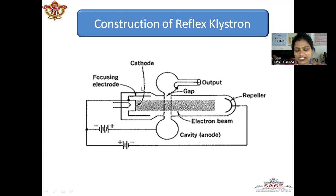One is the buncher cavity, other is the catcher cavity. But in this we are having only one which acts as an output. And here we have a repeller. In two cavity klystron we were having the collector. Here we are having the repeller.